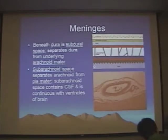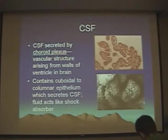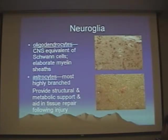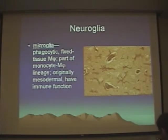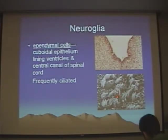The meninges have various cell layers. The dura has been stripped off here. This is the arachnoid layer, the subarachnoid space, and then the pia mater, which is actually glued to the surface of the brain. We also have the choroid plexus, which secretes CSF. Neuroglial cells include oligodendrocytes that provide myelination within the CNS, astrocytes which are the most highly branched, microglial cells which are phagocytic and derived from the monocyte-macrophage lineage, and ependymal cells which line the ventricles and the central canal of the spinal cord and are frequently ciliated.